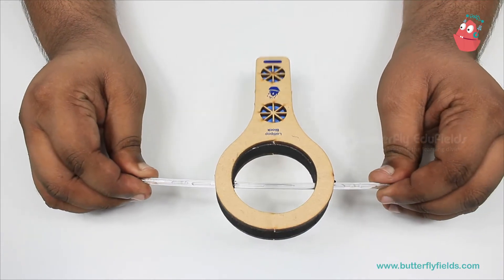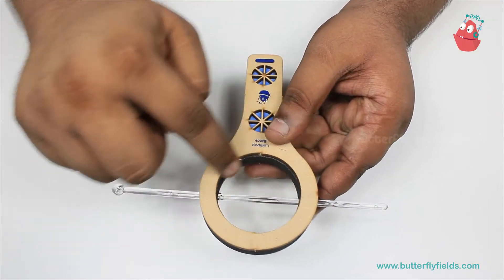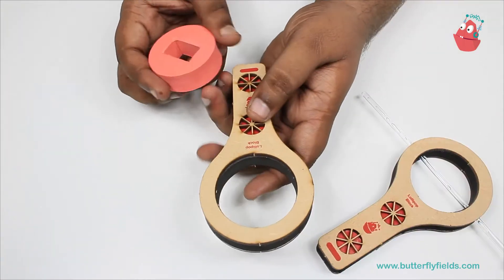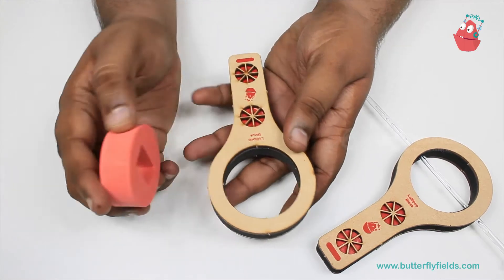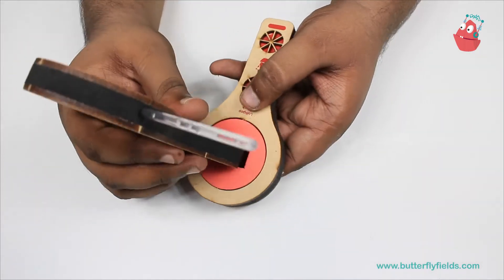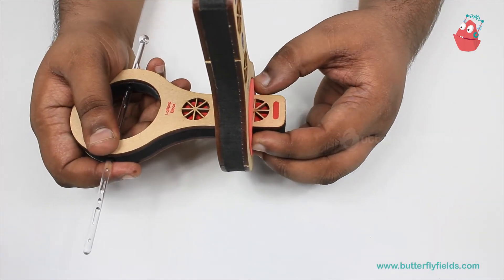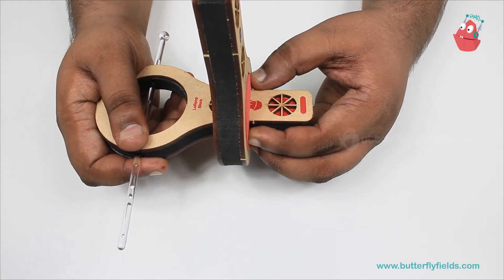The next thing we will put the stand bit into this lollipop block and fix this here. Bring it a little bit outside at the other end.